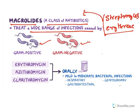The main important drugs in this class are erythromycin, azithromycin, and clarithromycin. They can be taken orally to treat mild to moderate bacterial infections like respiratory, gastrointestinal, and genitourinary infections, especially upper respiratory tract infections.